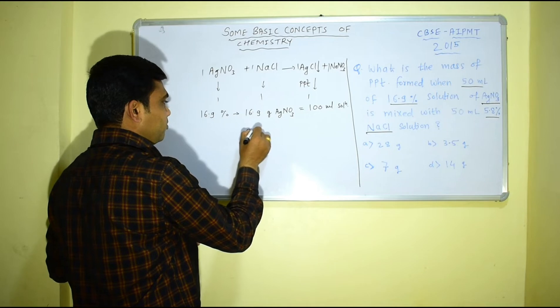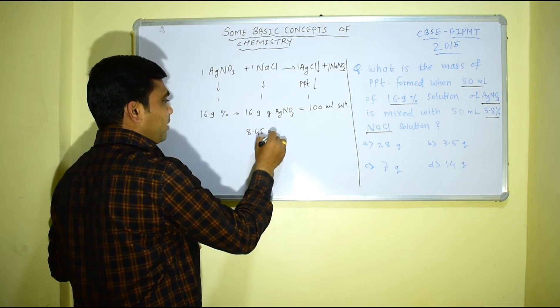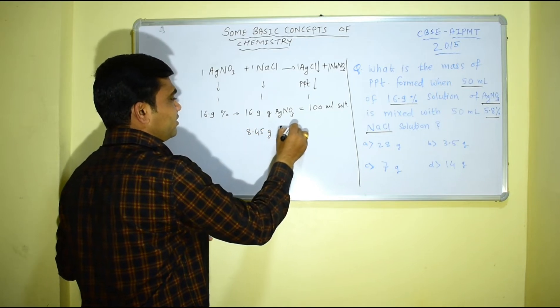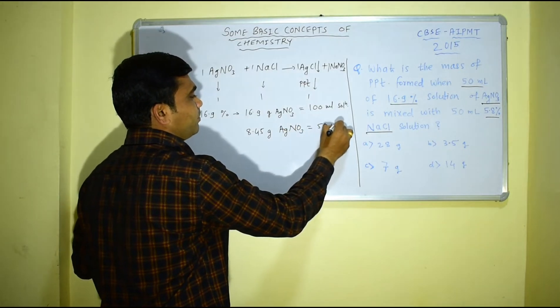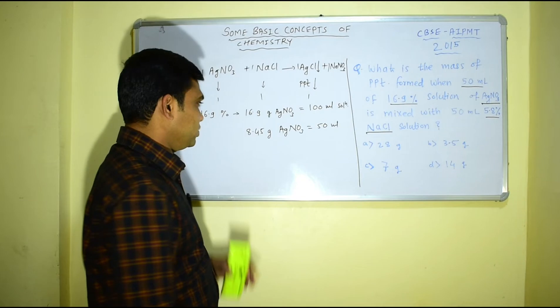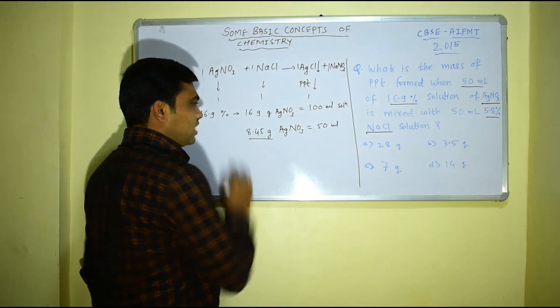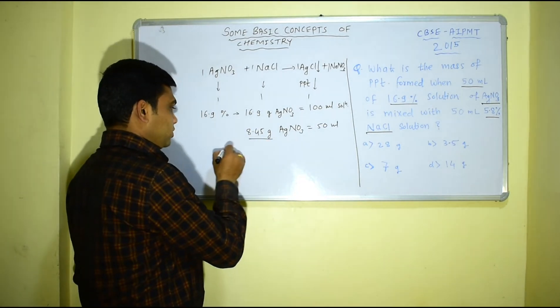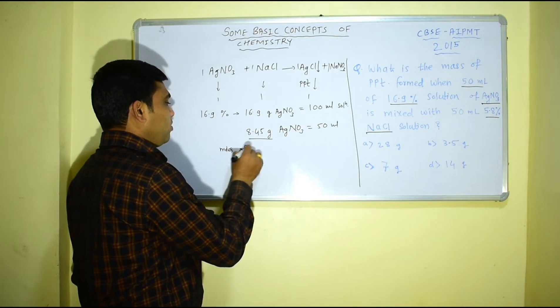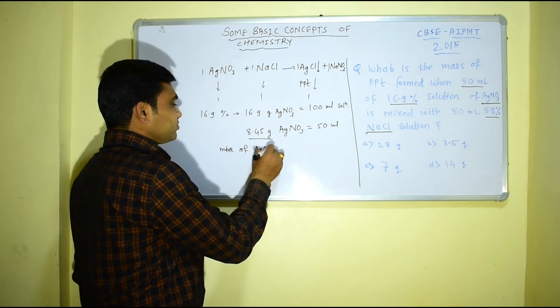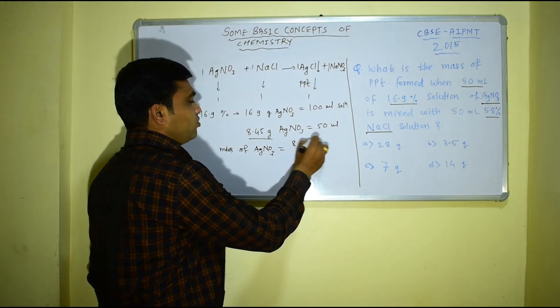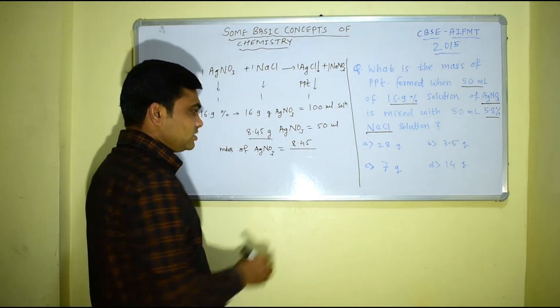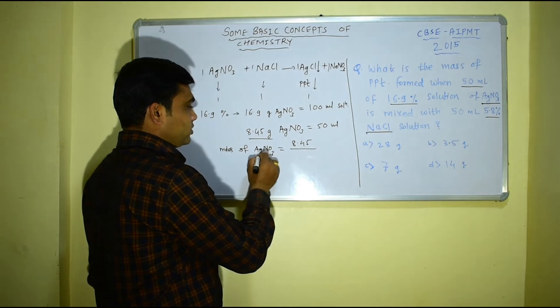And from this mass I can determine moles of AgNO3. So moles of AgNO3 will be mass, that is 8.45 divided by molar mass.